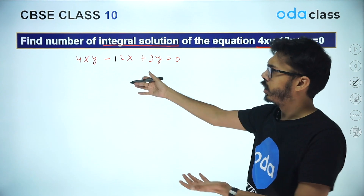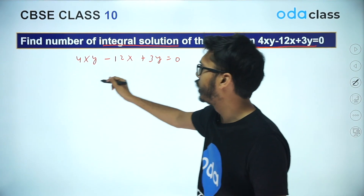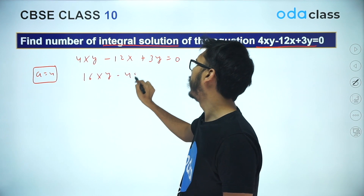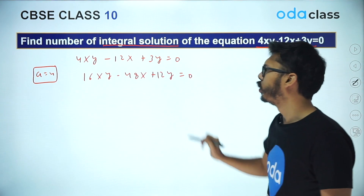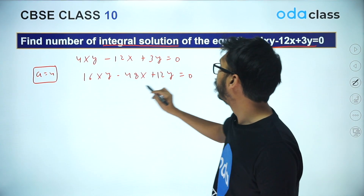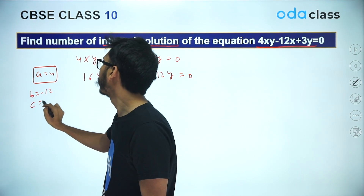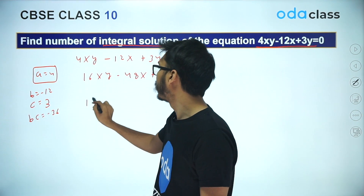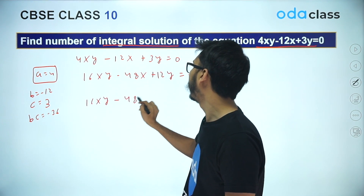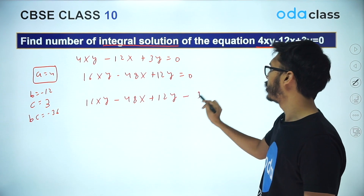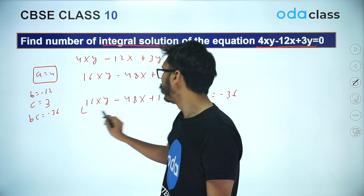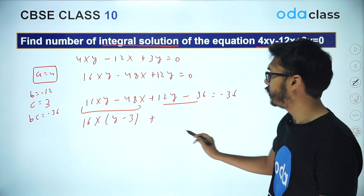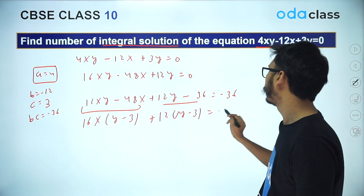There are two ways to do this. Using the standard method, first multiply by A, where A is 4. So you get 16XY minus 48X plus 12Y equal to 0. Then add BC: B is minus 12 and C is 3, so BC is minus 36. Adding minus 36 to both sides gives 16XY minus 48X plus 12Y minus 36 on the left, and minus 36 on the right.